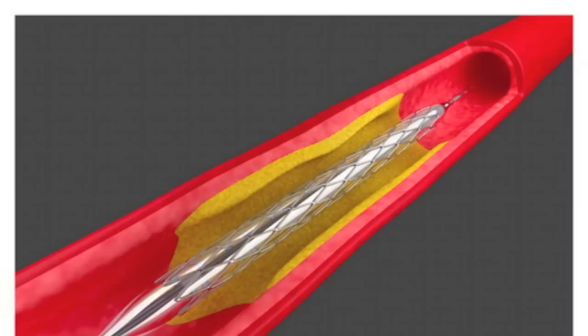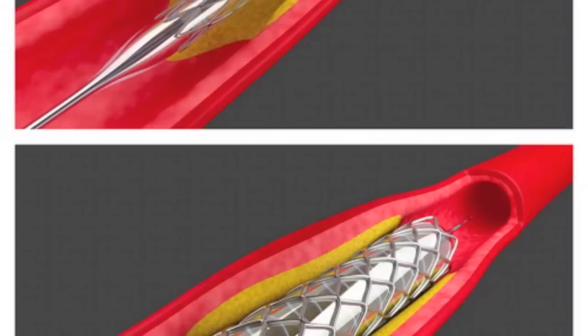During angioplasty, a catheter with a balloon in its tip is threaded to the coronary artery. Once in place the balloon can be inflated, pushing the plaque against the artery wall. This creates a wider path for blood to flow to the heart.